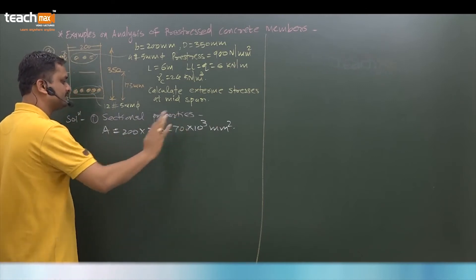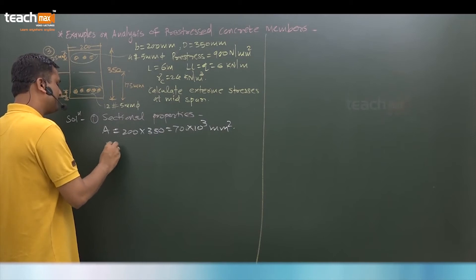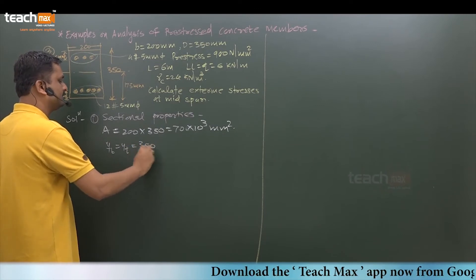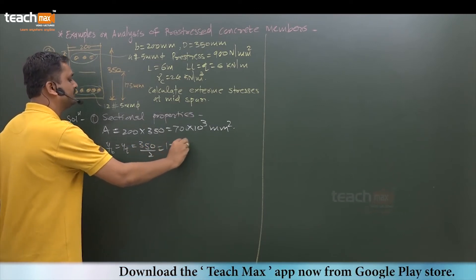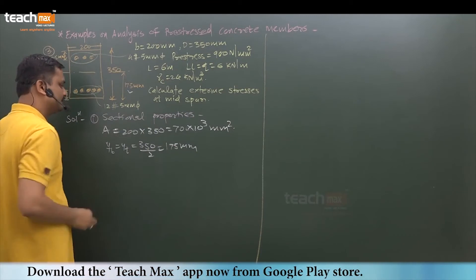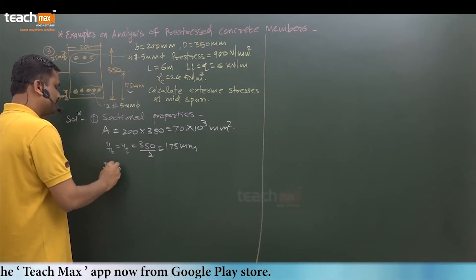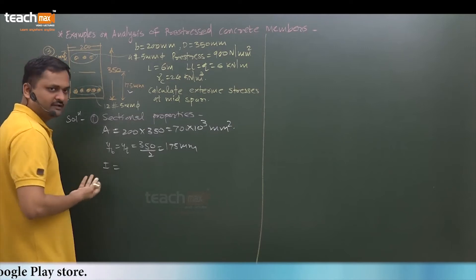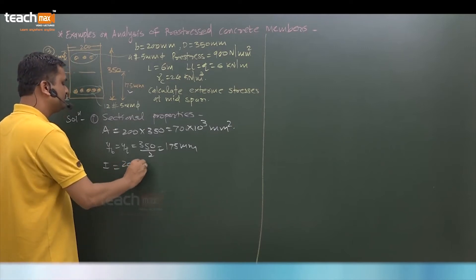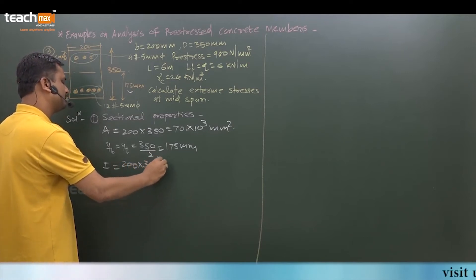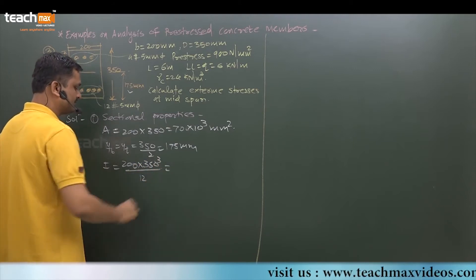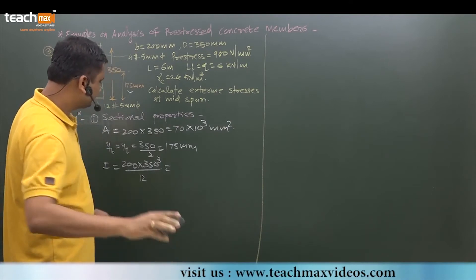Y max, y bottom and y top are the same and it is 350 divided by 2, which equals 175mm. Then moment of inertia - it is a rectangular section, so bd cubed by 12. So 200 into 350 cubed by 12.